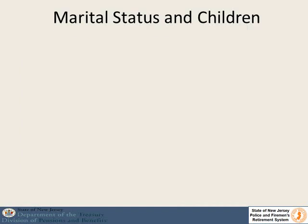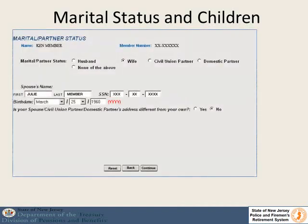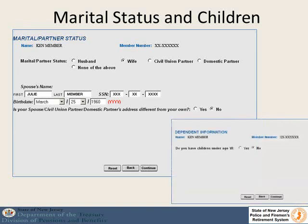The next two screens will ask for your marital status and any children under the age of 18 that you may have. This is because there are survivor benefits for both your surviving spouse or partner and your surviving eligible children.